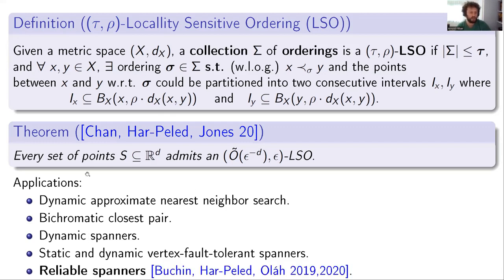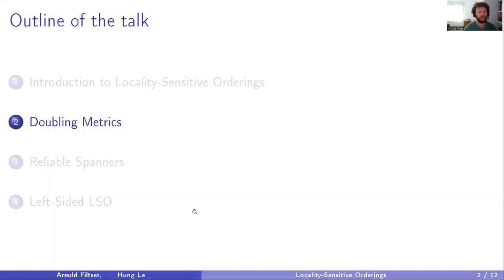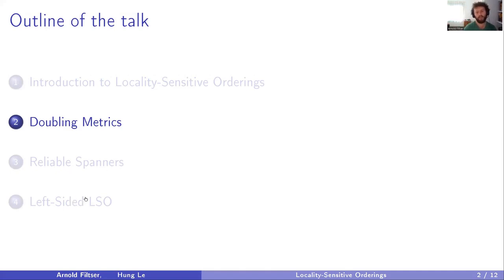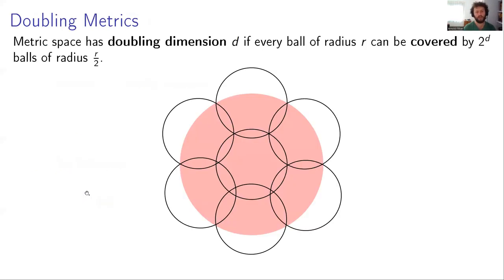Most relevant today, Bukhin, Pellet, and Ola showed that one can use LSOs to construct reliable spanners. In the rest of the talk, we'll discuss LSOs in doubling metrics, then their applications to reliable spanners, and lastly left-sided LSOs, which is a different type of LSO.